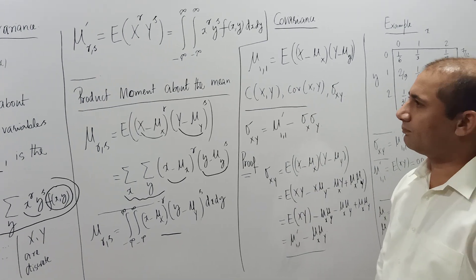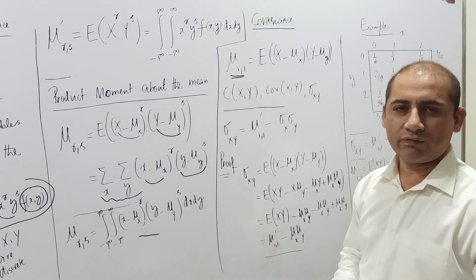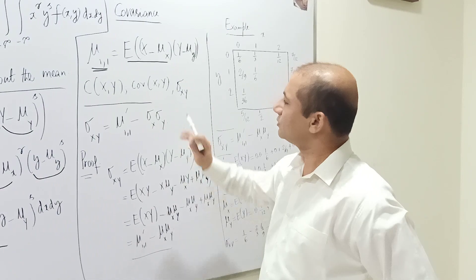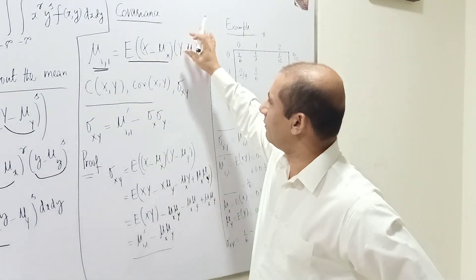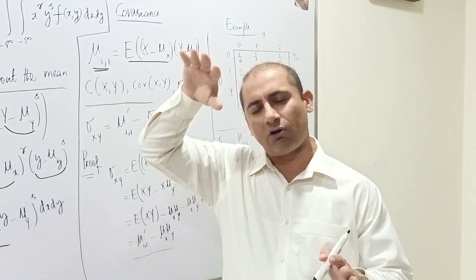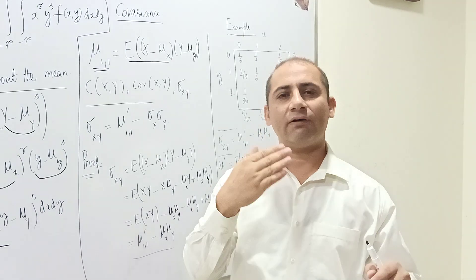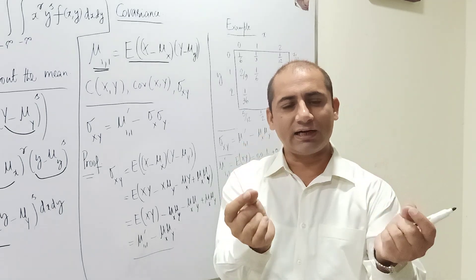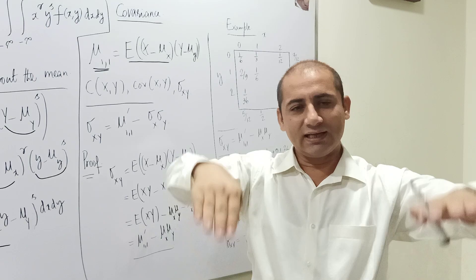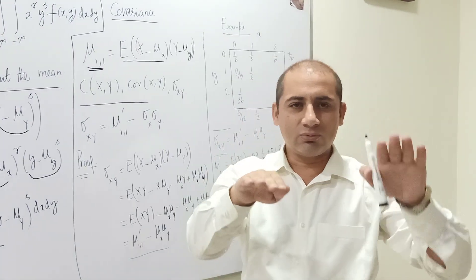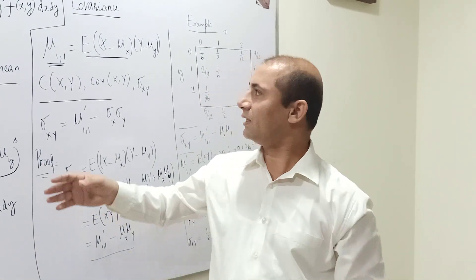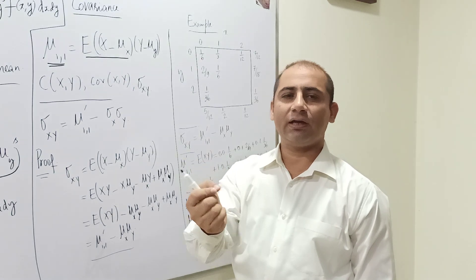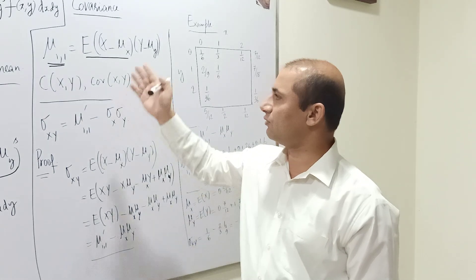One very interesting product moment is mu_{1,1}, which we call covariance. This is the expected value of (x − mu_x) multiplied by (y − mu_y). Random variable x represents one quantity, y represents the second, and we want to see how a change in one variable impacts the other. When we have a data table, that dependence is not directly visible, so we use covariance to figure out the relationship between the columns.